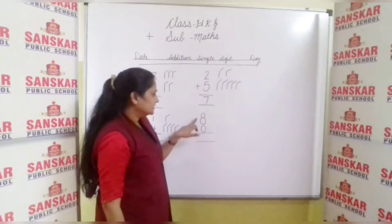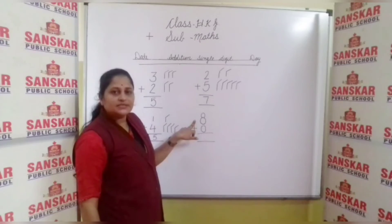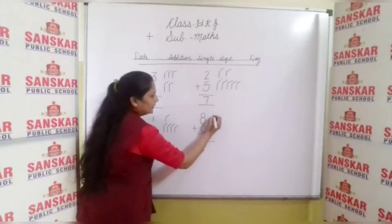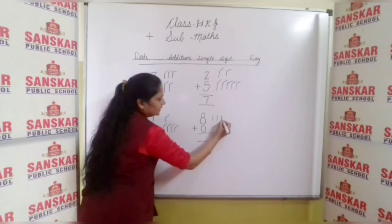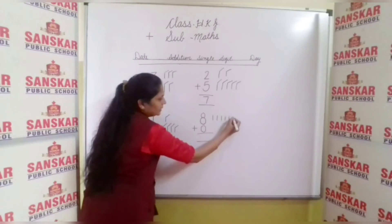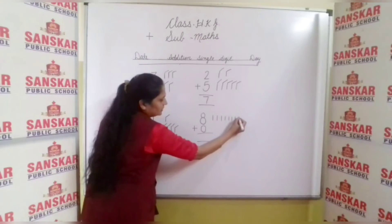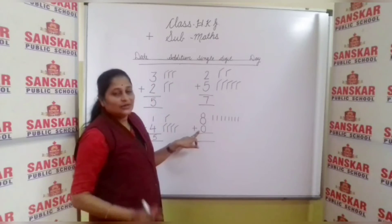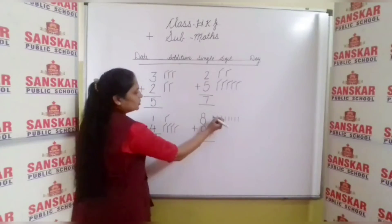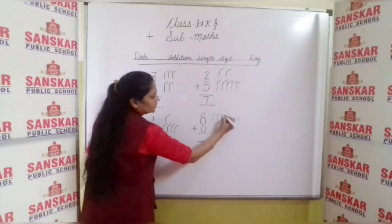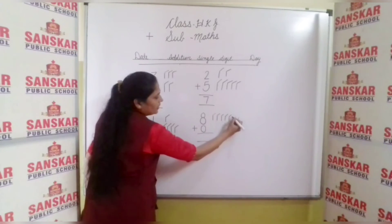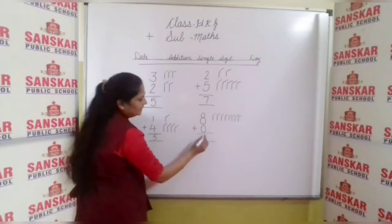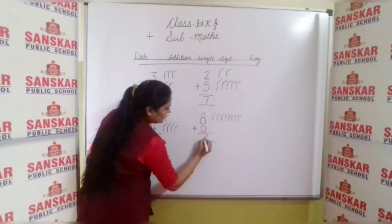Next, this one is number eight. Which number is this? Number eight. So make lines: one, two, three, four, five, six, seven, and eight. And next number eight. Then write down number eight.